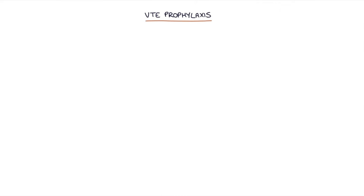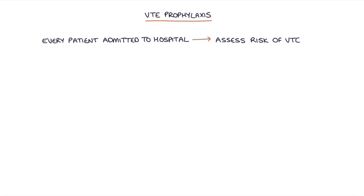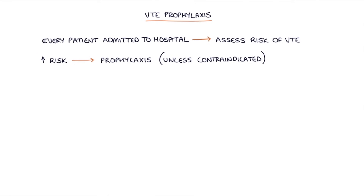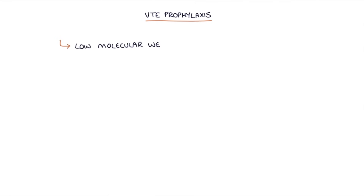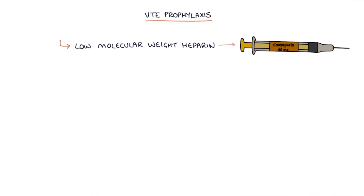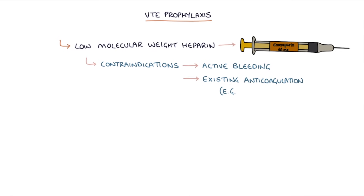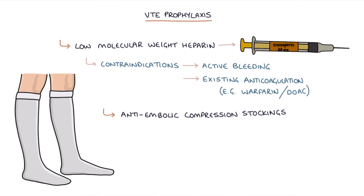Next, let's talk about venous thromboembolism prophylaxis or VTE prophylaxis. Every patient admitted to hospital should be assessed for their risk of venous thromboembolism. If they're at an increased risk of VTE, they should receive prophylaxis unless it's contraindicated. Prophylaxis is usually with a low molecular weight heparin such as enoxaparin. Contraindications include active bleeding or existing anticoagulation such as warfarin or a DOAC. Anti-embolic compression stockings are also used unless contraindicated; the main contraindication is significant peripheral arterial disease.